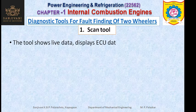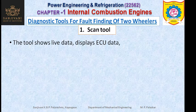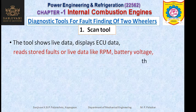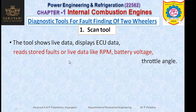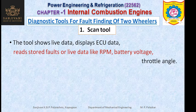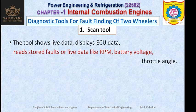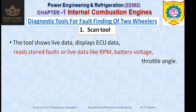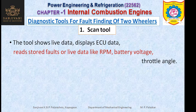The scan tool will also show live data — it will display the ECU data. The electronic control unit data will also be displayed by the scan tool, showing what data is received by the ECU. The scan tool will also read the stored codes. Live data like RPM can also be read by the scan tool. The battery voltage can be noted by the scan tool, and it can read and erase the stored codes. The angular position of the throttle port can also be read by the scan tool.